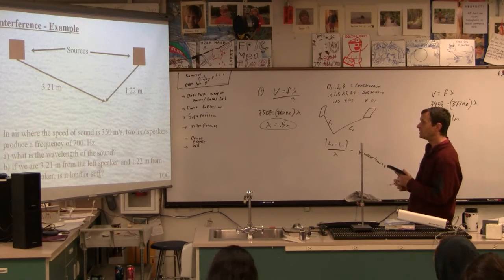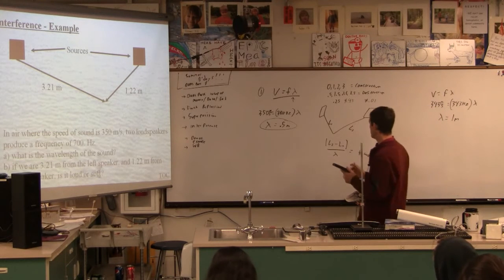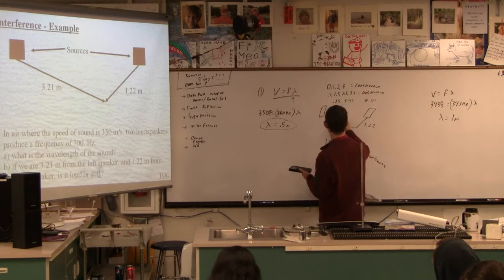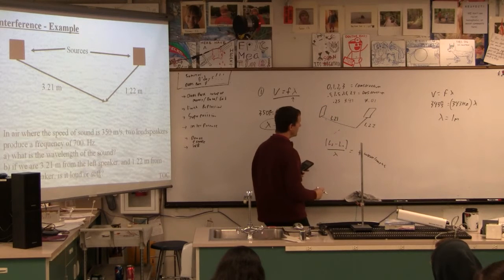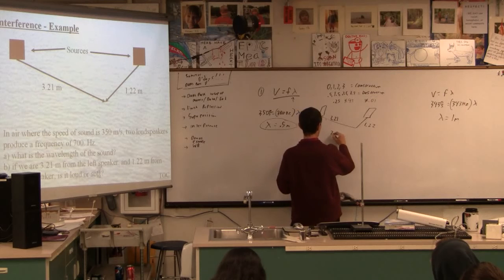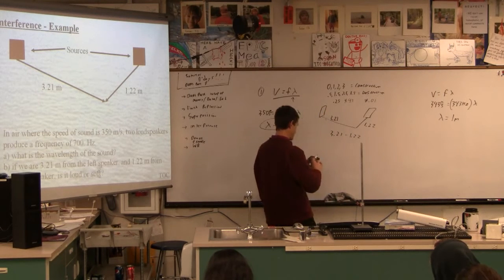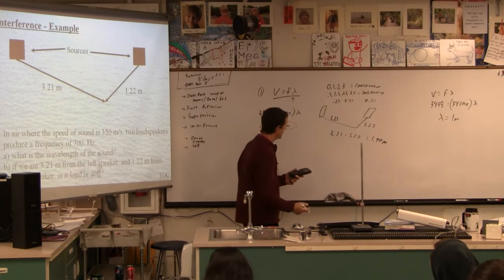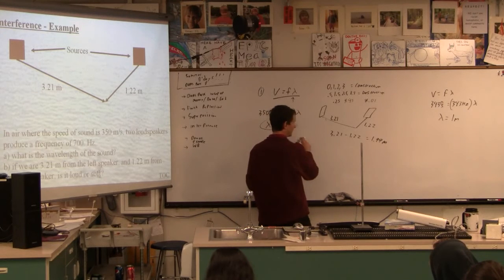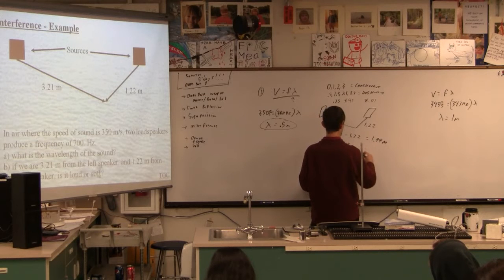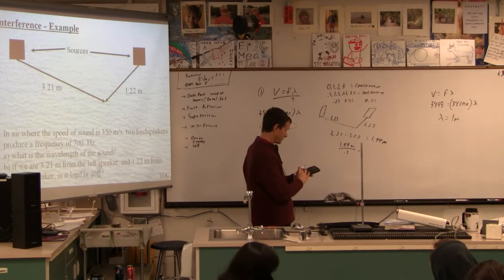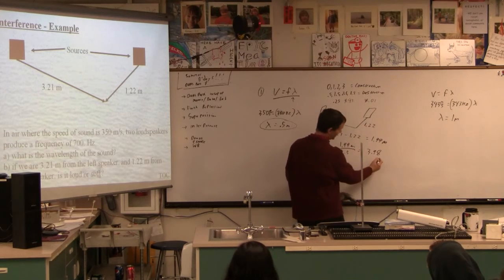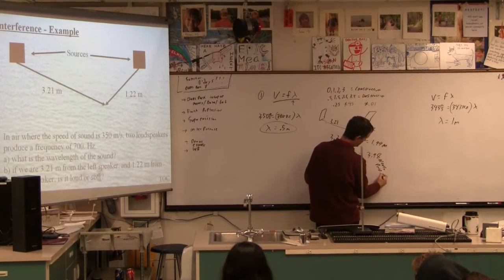Okay. So that's step one, we did that. And then if we are 3.21 meters from the left speaker and 1.22 from the right speaker, so the picture is exactly the opposite of this. We're close to this guy. 1.22 and 3.21. I'm having a hard time writing numbers. Then let's figure out, first off, the difference in distance is just 3.21 minus 1.22. This is 1.99 meters. And then how many wavelengths is that? How many 0.5s is that? 1.99 meters divided by 0.5 is what? Is that 4? Close. Yeah, it's close, it's 3.98. So which one is it? Is it constructive or destructive? It's mostly constructive, but nearly perfect constructive.